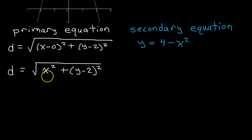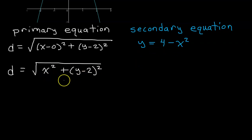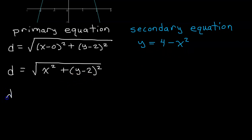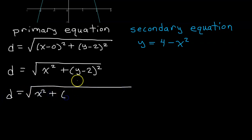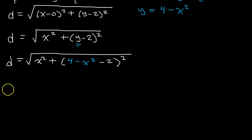Notice how the primary equation has two variables. We need to write this in terms of a single variable. Our strategy will be to use the secondary equation and do a substitution to get one variable. Luckily, we already have the secondary equation as y equals 4 minus x squared — y is already by itself. So we can quickly make this substitution. We will have d equals the square root of x squared plus, and now substituting for y, we have (4 minus x squared minus 2) squared.